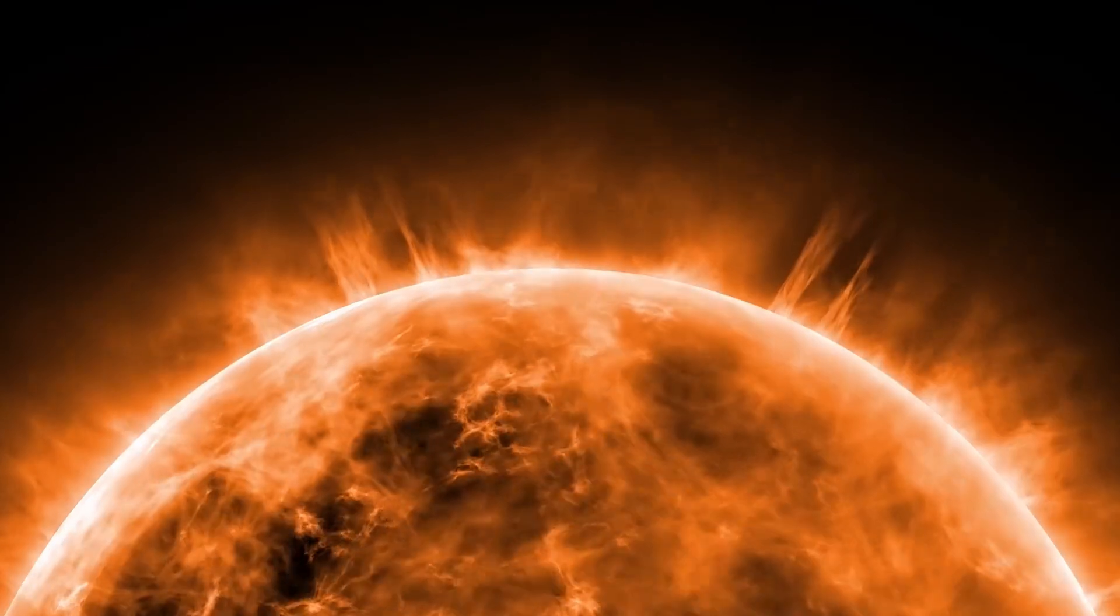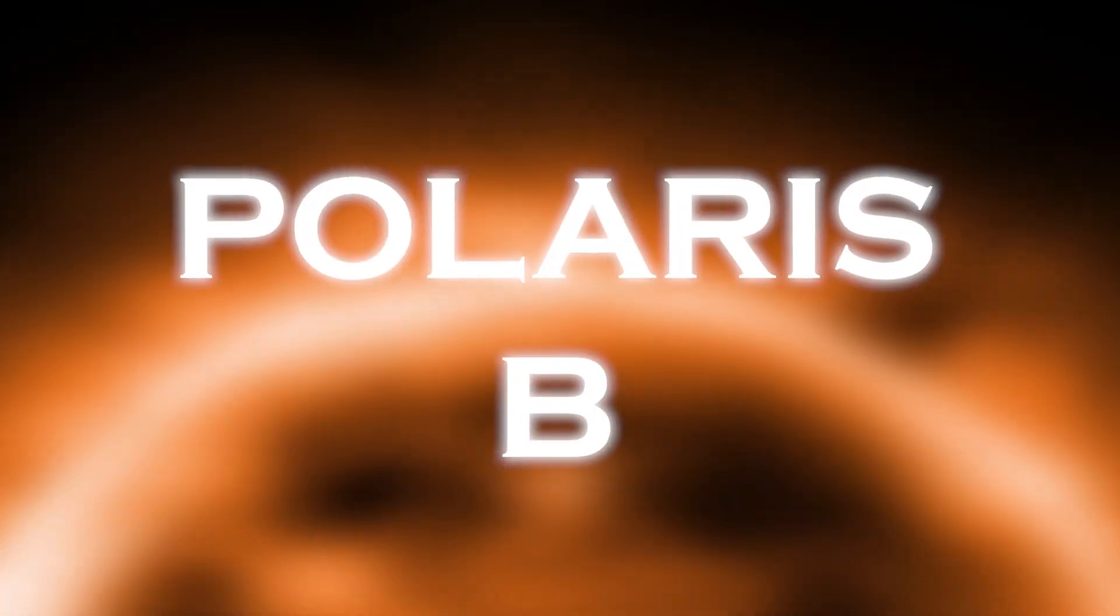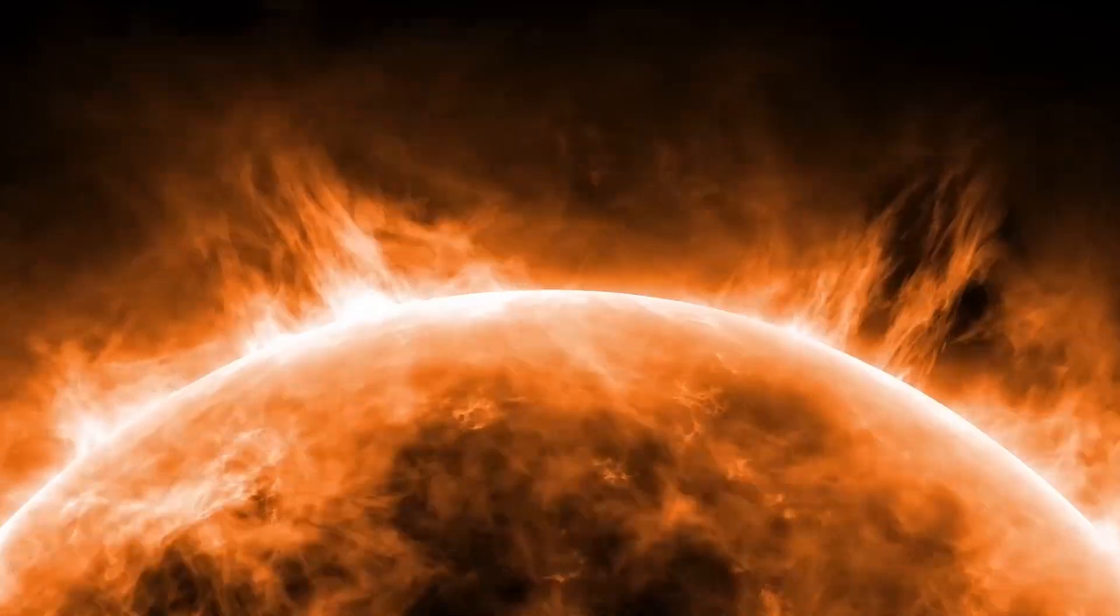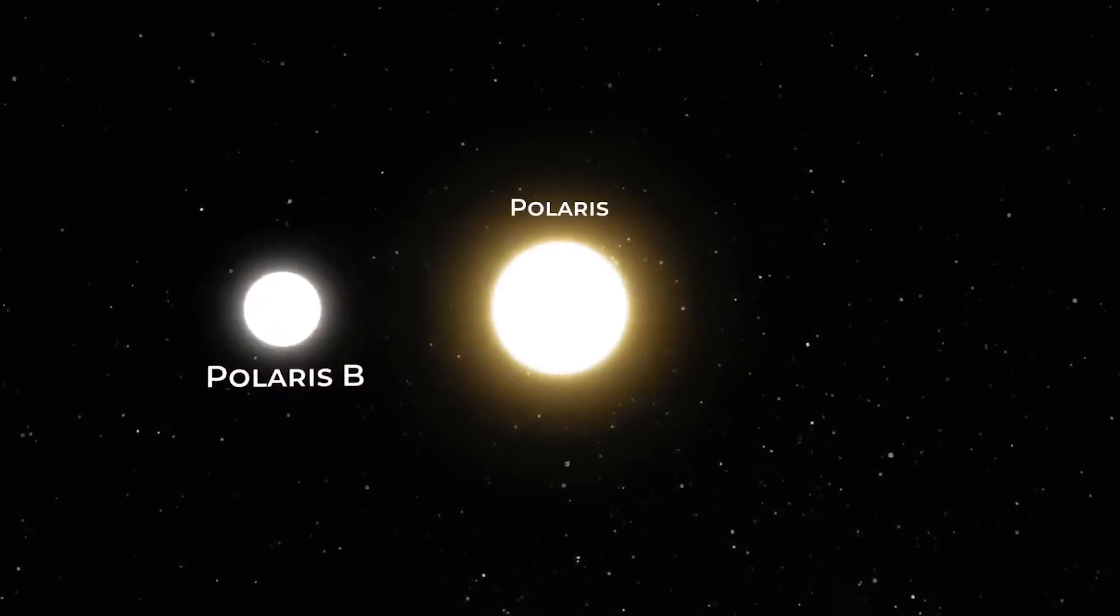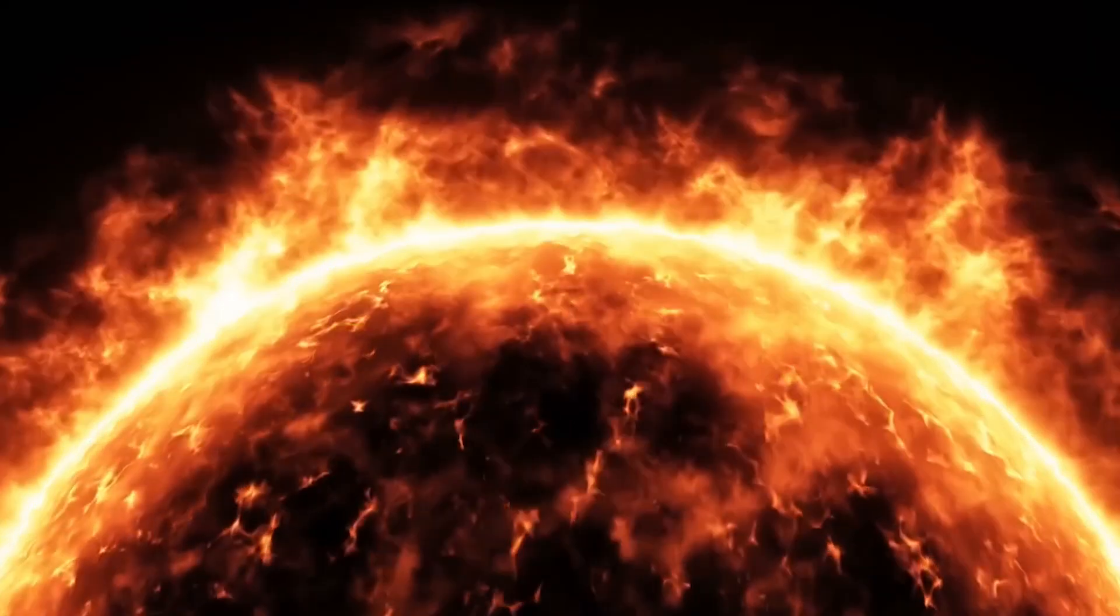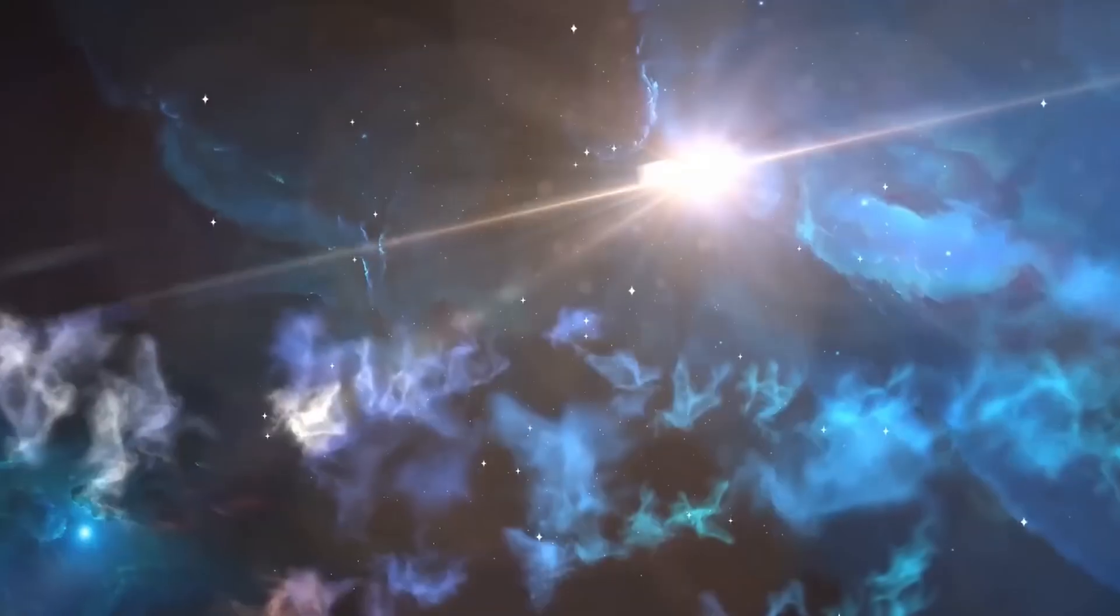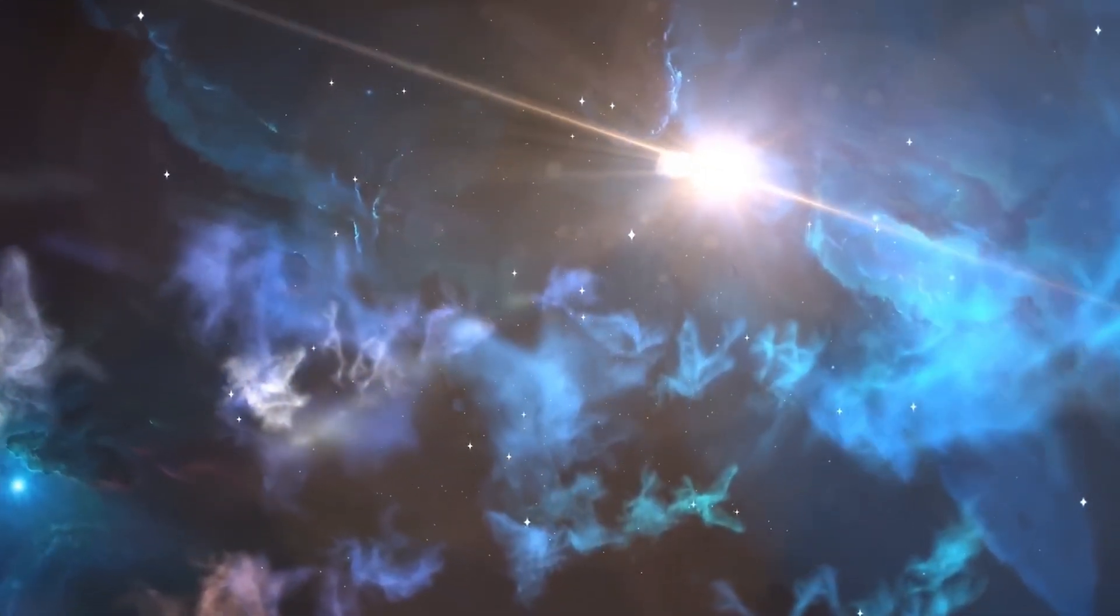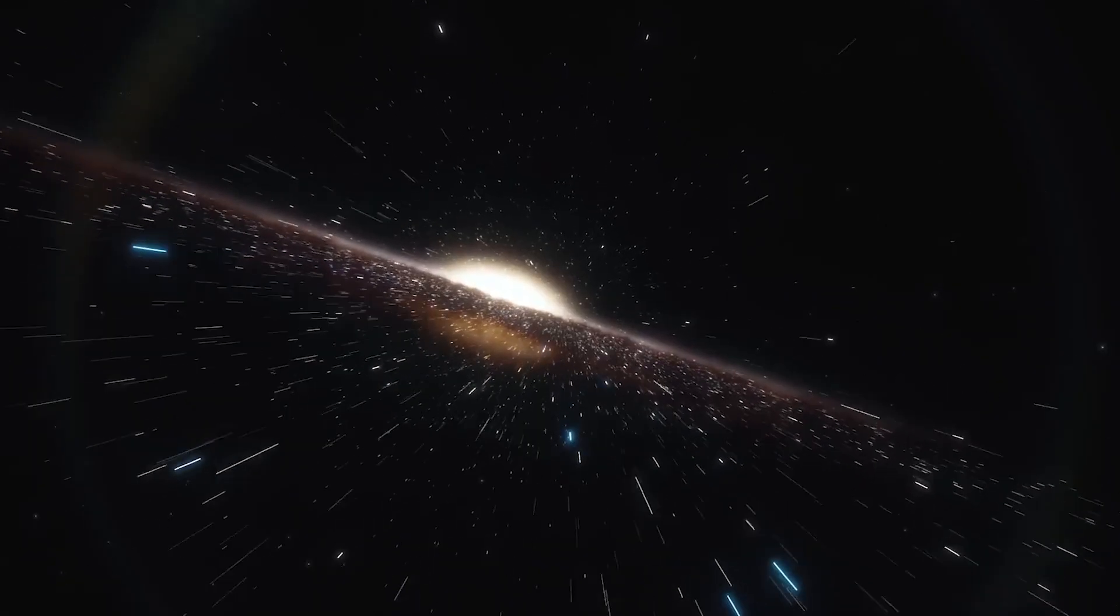In addition, there is a third companion, Polaris B, orbiting this binary pair. The gravitational forces between these stars shape their orbits and affect their individual behaviors, which has a direct impact on their brightness and other notable characteristics.